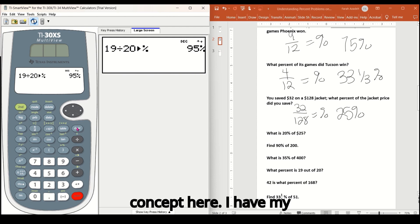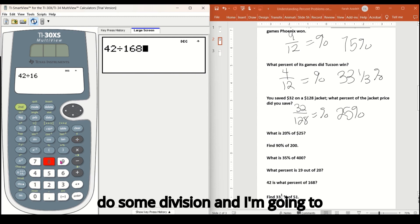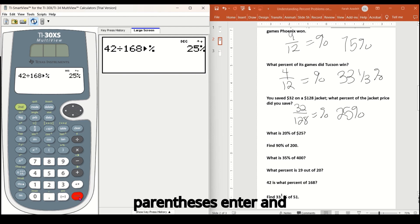42 is what percent of 168. Same concept here. I have my part, which is 42, my whole, which is 168. So I'm going do some division and I'm going to say, give my answer as a percent. So second, close parentheses enter, and it's 25%. So 42 is 25% of 168.